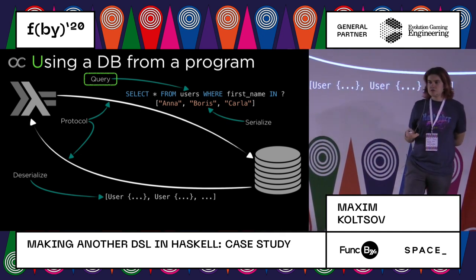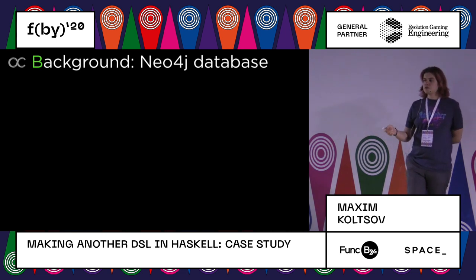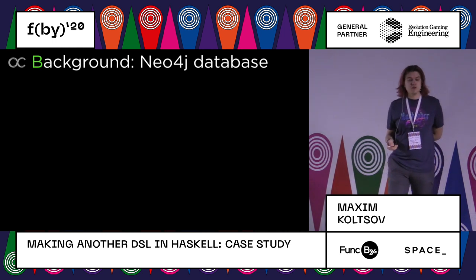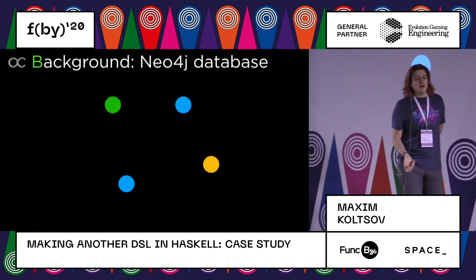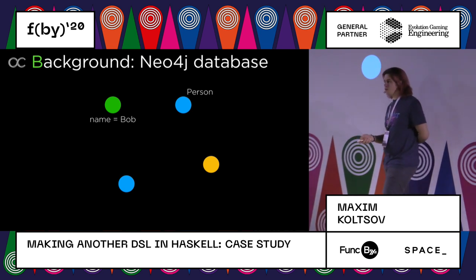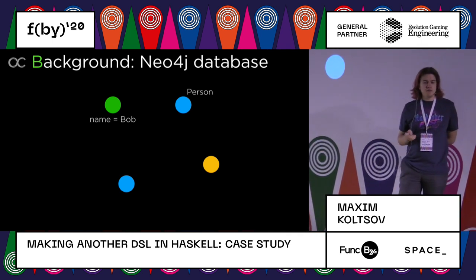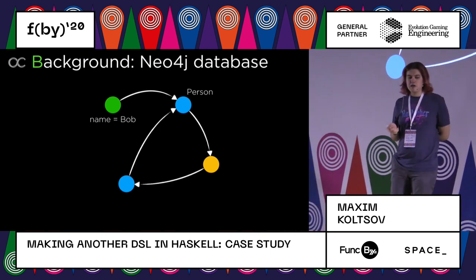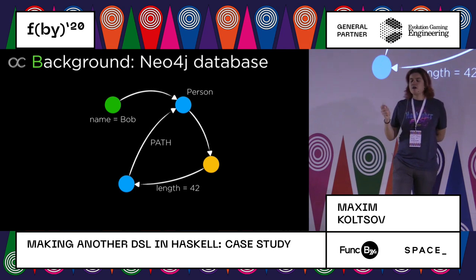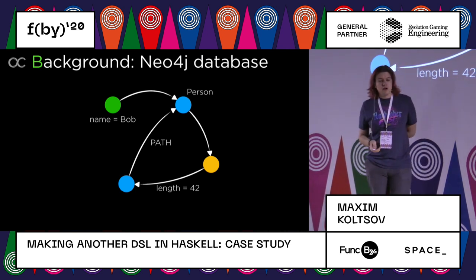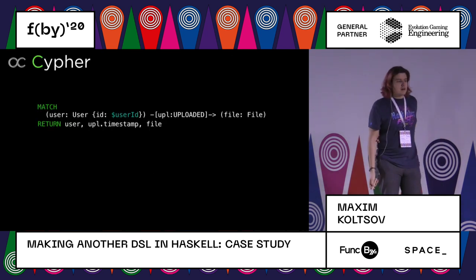We will not use SQL, but will look at another database called Neo4j. It's a graph database. Neo4j stores nodes, which can have labels and some properties — think of properties like a JSON object with string keys and values. Nodes are connected with relations, and these relations also have labels and properties. Nodes may have multiple labels, but relations may have at most one label. To interact with this database, you use a special language called Cypher.